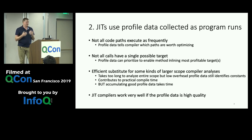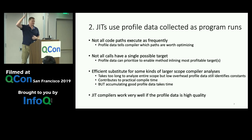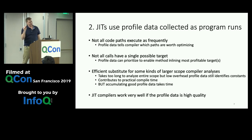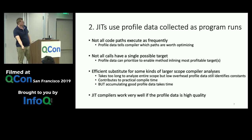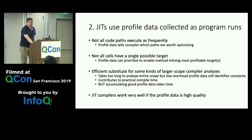Profile data can efficiently substitute for complex analysis. You can identify constants via profiling rather than extreme analysis of long call chains. If you profile a use site and see that only one value ever arrives, you can be fairly confident it's likely a constant and generate better code assuming it is. JIT compilers work really well when profile data is high quality — that's why JITs get such great performance.